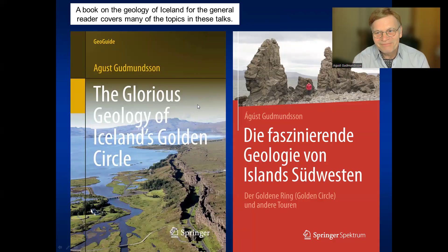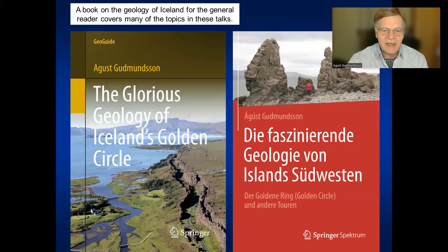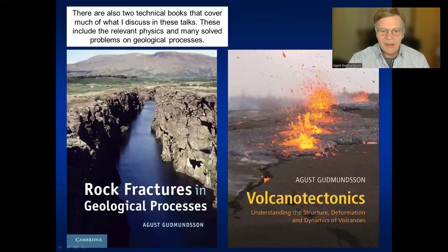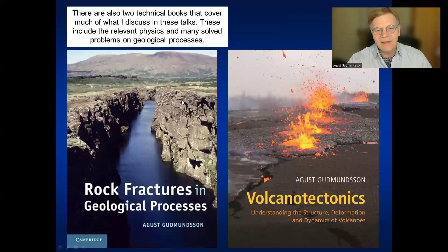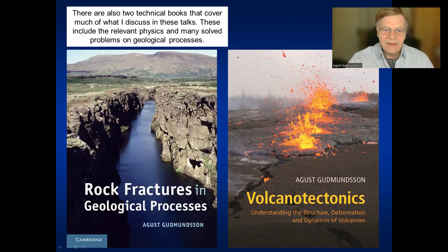The processes discussed here are explained in more detail in books. For the general reader, many of the processes are discussed in relation to the geology of Iceland, or the so-called Golden Circle, in books available in English and German. For those who like equations and physics, the physics behind these processes — including fluid flow in the Earth's crust, volcanic activity, earthquakes, and tectonic activity — are discussed in detail in two books: one called 'Rock Fractures and Geological Processes' and the other called 'Volcano Tectonics'.